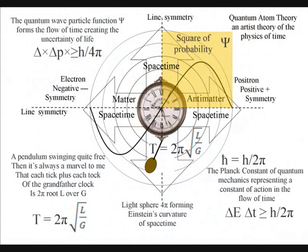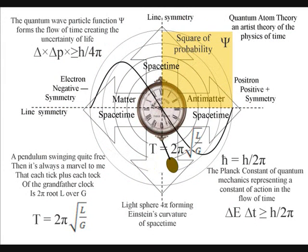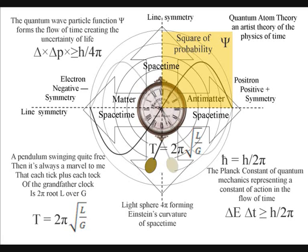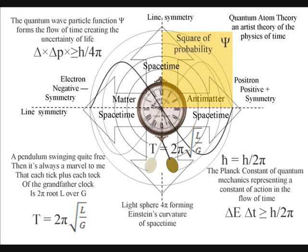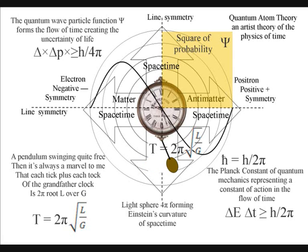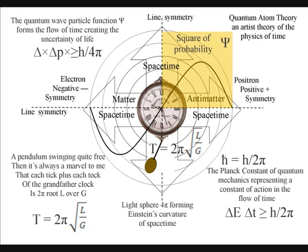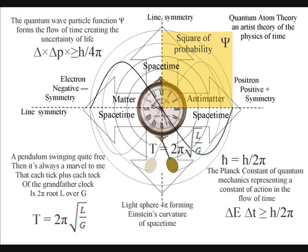I will start with this diagram representing the flow of time. In the top left hand corner we have the equation known as Heisenberg's uncertainty principle. With four pi representing a sphere, we have four pi in this equation because the uncertainty principle is formed by the quantum wave particle function, or probability function of quantum mechanics, that expands out as an inverse sphere. It would be logical if time was formed by this process — representing the spontaneous absorption and emission of light — that time would expand out in every direction in three-dimensional space with the expansion of the universe.